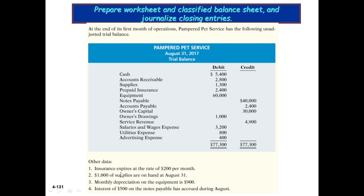For the adjustments: first, insurance expires at the rate of $200 per month, so insurance expense is debited and prepaid insurance is credited. One thousand dollars of supplies are on hand at August 31st — total supplies were $1,300, so $300 is the supplies expense debit and supplies credit. Monthly depreciation on equipment is $900, depreciation expense debit and accumulated depreciation credit. Interest of $500 on the notes payable accrued during August, so interest expense is debited and interest payable is credited.